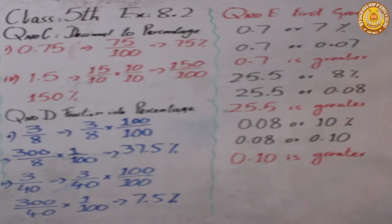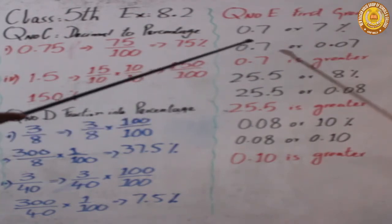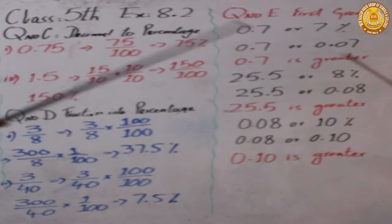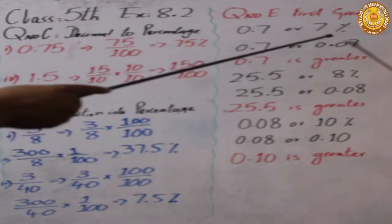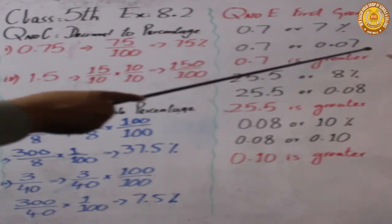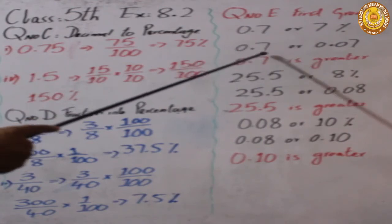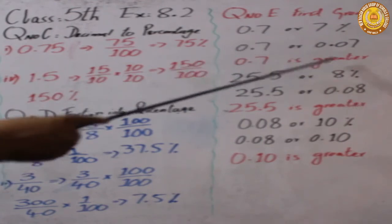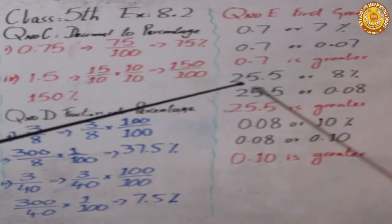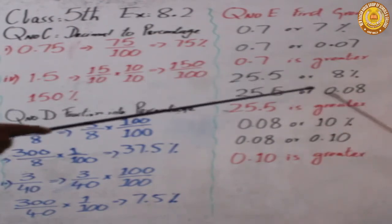Now let's move to part E, where we compare values. The first values given are 0.7 and 7%. Converting 7% means 7 over 100 = 0.07. Comparing: 0.7 is greater than 0.07, so 0.7 is the greater value. Next question: 25.5 and 8%. Converting 8% gives 8 divided by 100 = 0.08. So 25.5 is greater than 0.08.